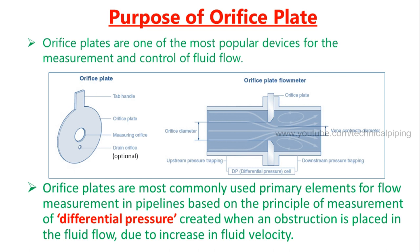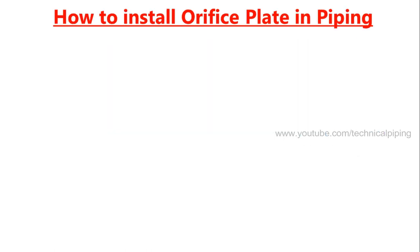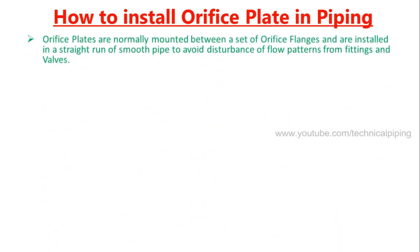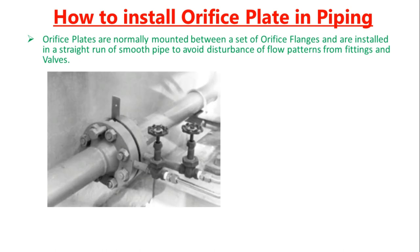Due to the increase in fluid velocity, let's talk about how to install an orifice plate in a piping system. Orifice plates are normally mounted between a set of orifice flanges and installed in a straight run of smooth pipe to avoid disturbance of flow patterns from fittings and valves.